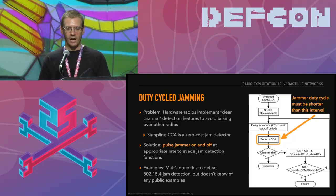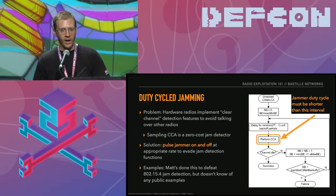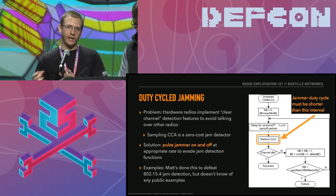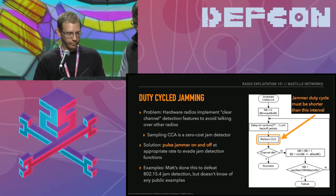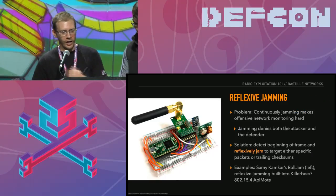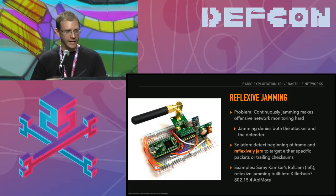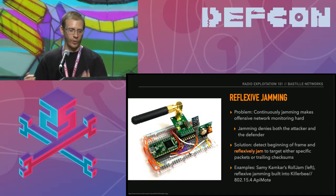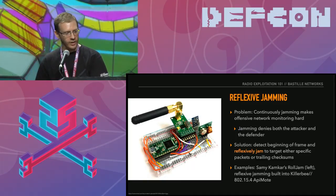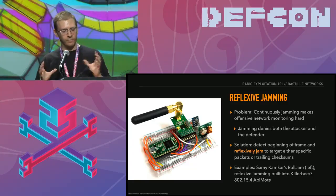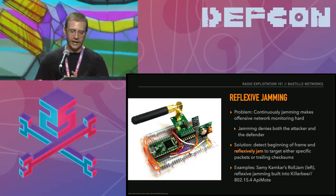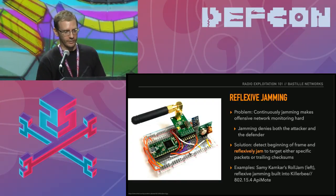For a demo, I have a single one-line script transmitting these packets to demonstrate preventing another device on a separate network from communicating. Here on the right we have a client pinging its access point. I run the script and the pings stop. I've sent 50 packets in this case. After a few seconds the pings start again. We've sent only 50 packets and effectively jammed the channel for several seconds.